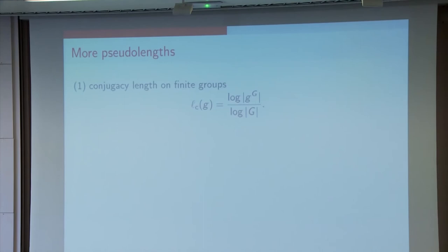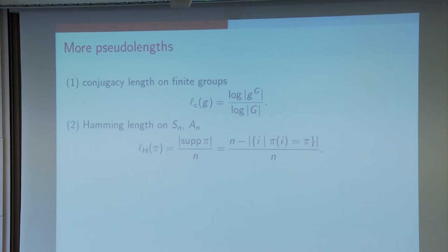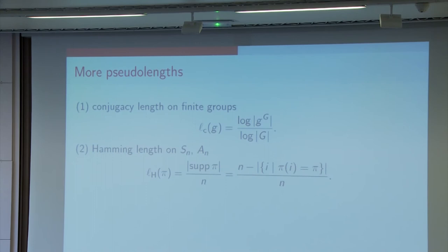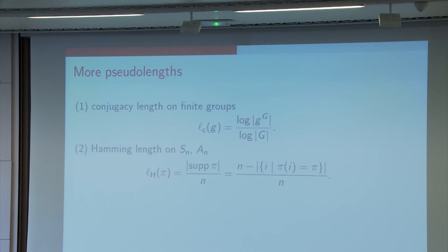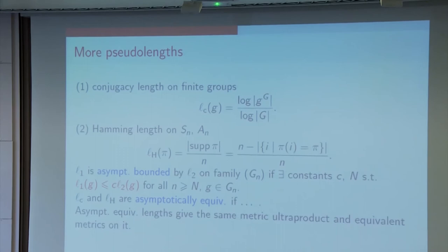We need some more pseudo-lengths because this conjugacy length is really hard to work with. So there is the one that I defined earlier. Hamming length is better. And we probably all know the definition of Hamming length on the symmetric and alternating groups. If you have a permutation π, then you divide the size of its support, the number of elements moved, by the rank of the group in which it's living.